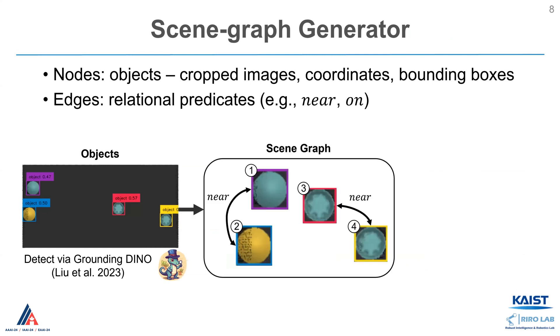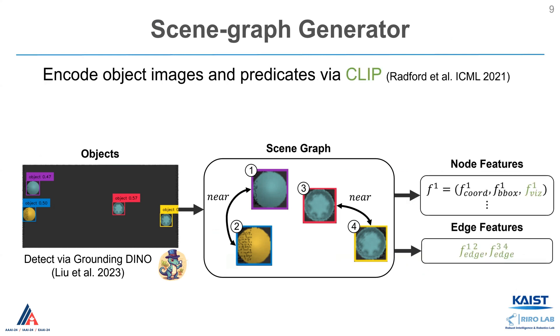The first module, the scene graph generator, takes detected objects as inputs and constructs a scene graph. The scene graph captures objects' information including their cropped images, coordinates, and bounding boxes as nodes, while representing relational predicates as edges. The object images and predicates are then encoded by CLIP, generating node and edge features, respectively.